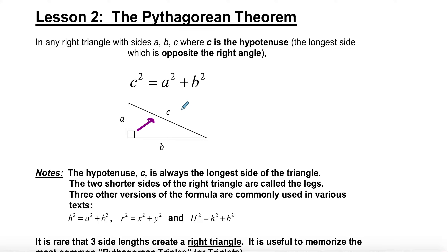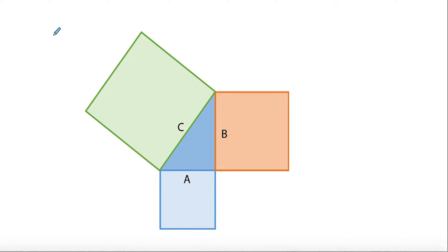The legs a and b are always added up in the formula, but the hypotenuse is always by itself. Sometimes sides can be marked with any letter — it doesn't have to be a, b, c — but you always need to know that the longest side across from the 90° angle is the one that is all by itself in the formula.